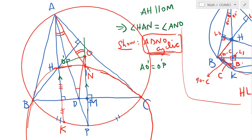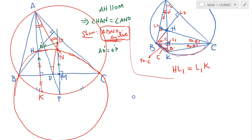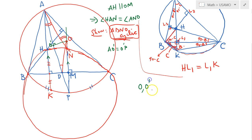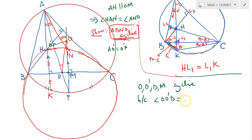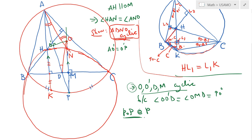Now notice that in this picture we have a cyclic quadrilateral: O, O', D, M are concyclic. The reason is simple — both angles OO'D and OMD are each equal to 90 degrees, so opposite angles add up to 180 degrees, making this a cyclic quadrilateral. Knowing it is cyclic, we can use the power of a point: specifically, the power of point P with respect to circle OO'DM.